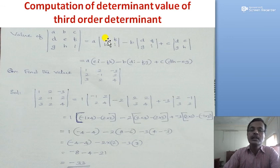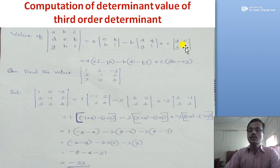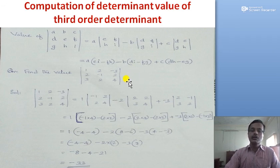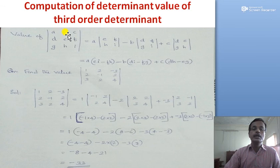So the value of the third order determinant is: A×(EI − FH) minus B×(DI − FG) plus C×(DH − EG). This is the expansion along the first row for a third order determinant.